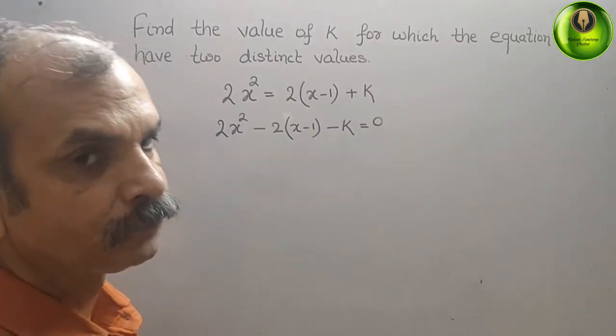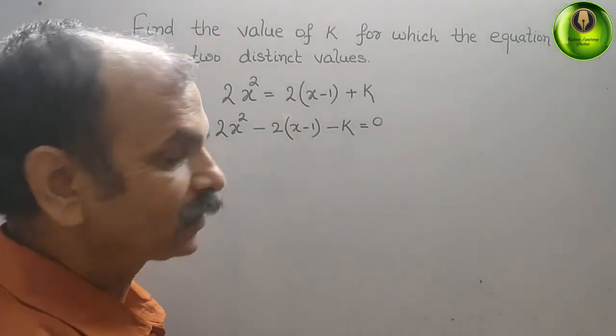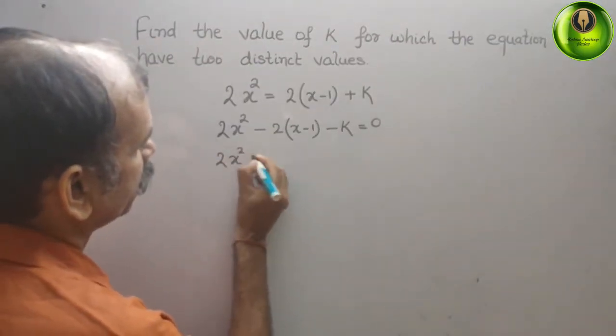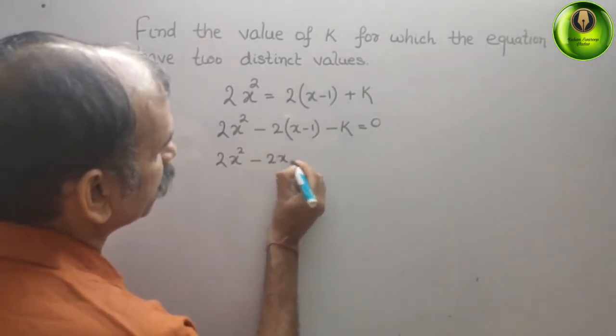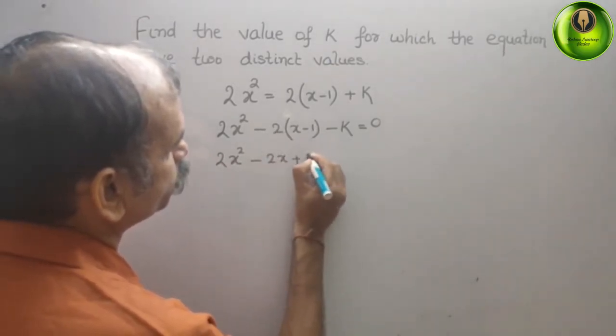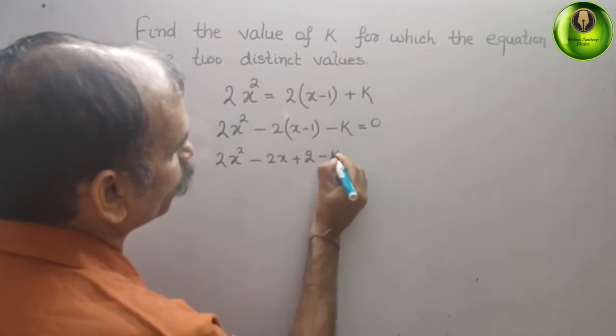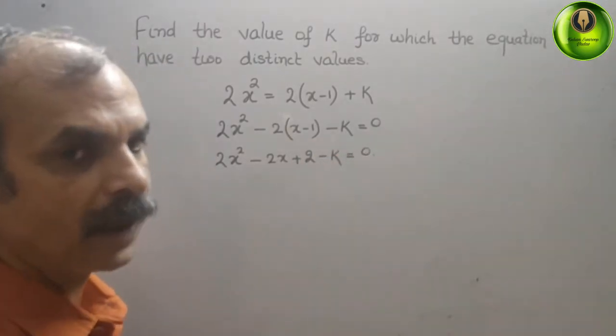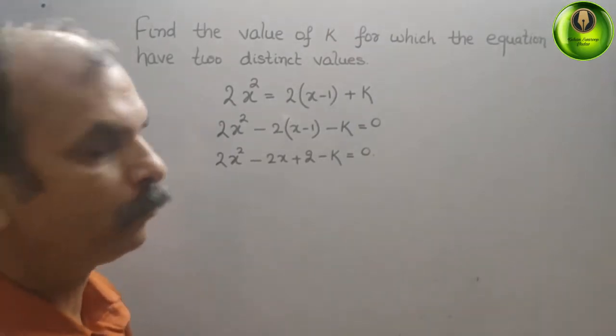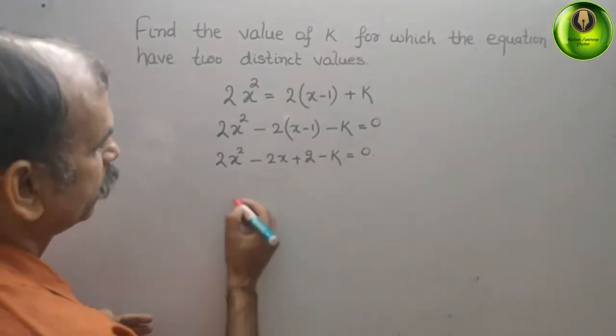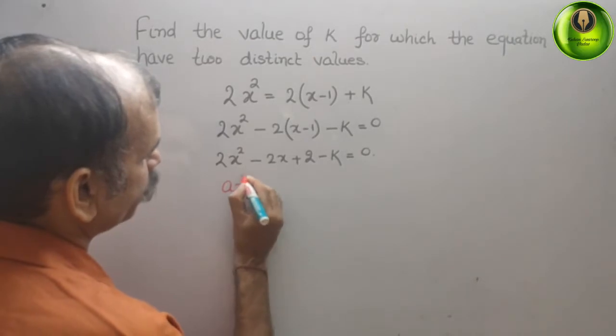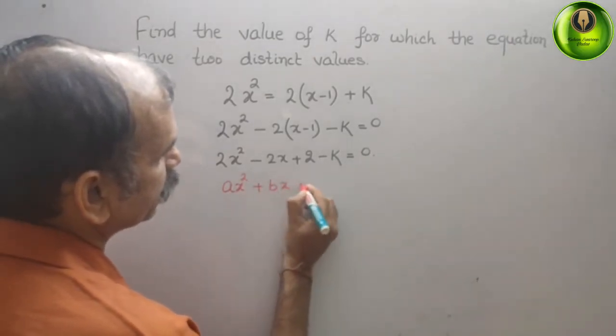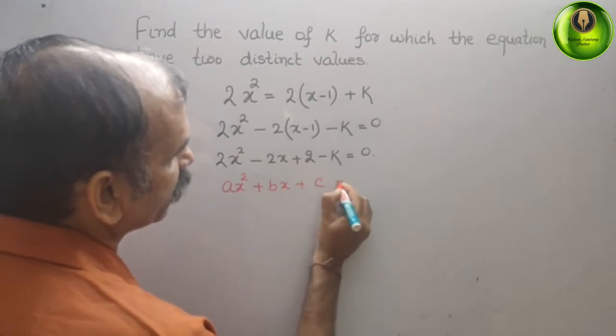What you will get: 2x² - 2x + 2 - k = 0. Now we will write in standard form, that is ax² + bx + c = 0.